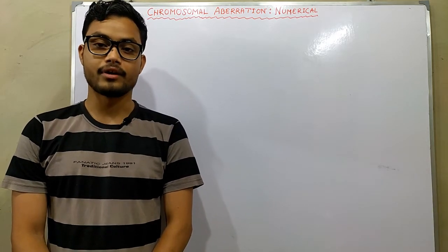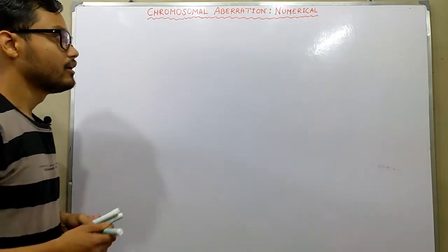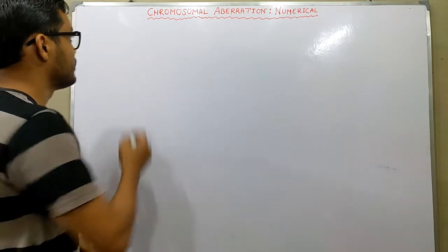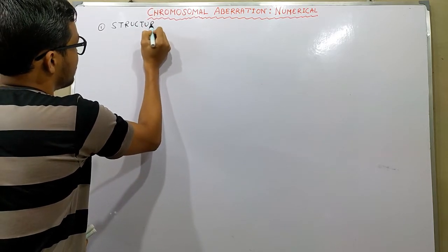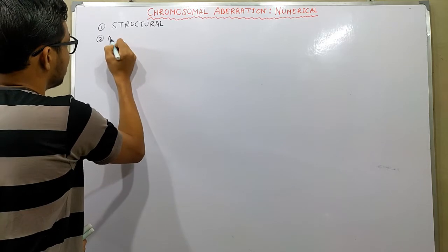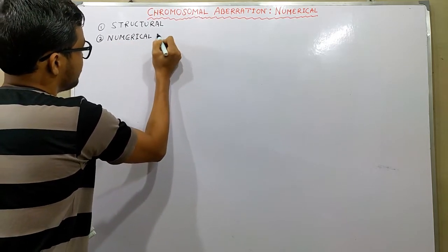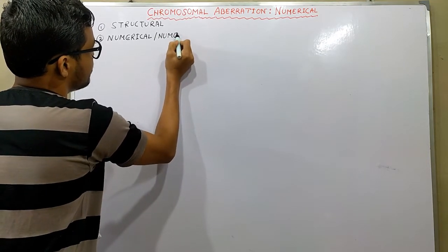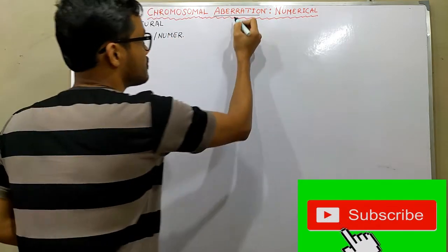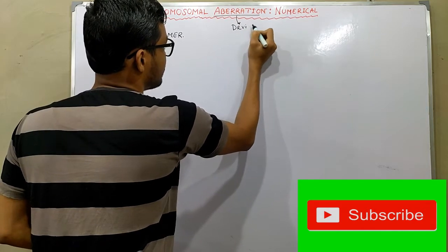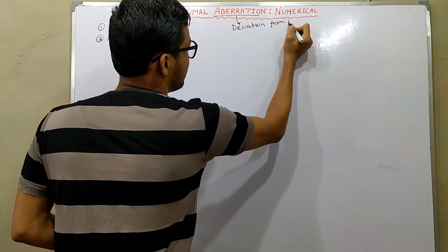Hello friends, welcome to Biology Concern. I am Animesh. So let's jump into the topic. Chromosomal aberration is classified into two major categories. Aberration stands for any kind of deviation from the normal.